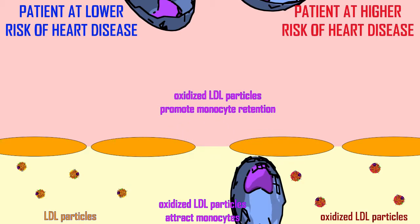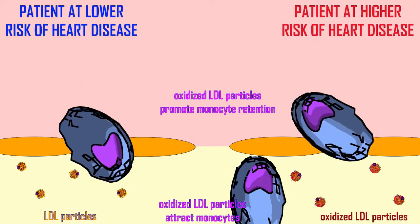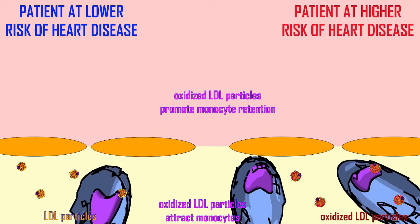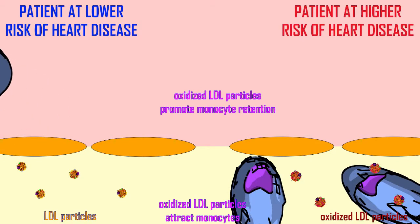In the patient on the left, monocytes which leave the blood to enter the blood vessel wall may return to the blood or migrate elsewhere. While in the patient on the right, the oxidized LDL particles make it more likely that the macrophages which develop in the blood vessel wall will remain there.